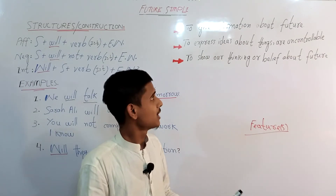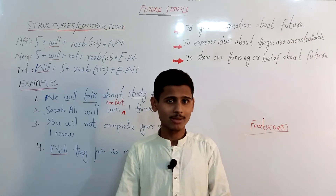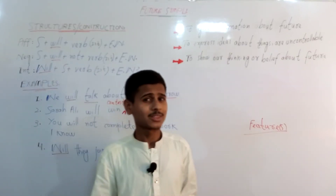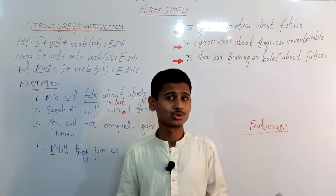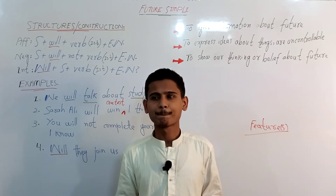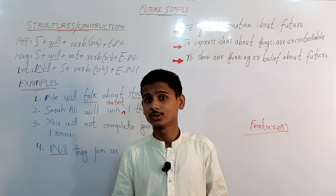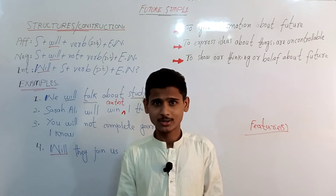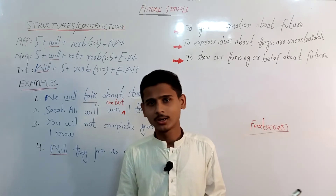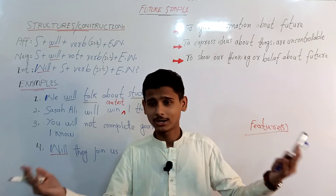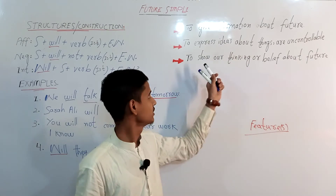The second usage: simple future is used to express ideas about things that are uncontrollable — things we cannot control. For example: 'The sun will set in the evening.' This is surely going to happen; nobody in the world can control it. Another example: 'I will turn 30 after 9 years.' These are two examples in the context of uncontrollable future events.